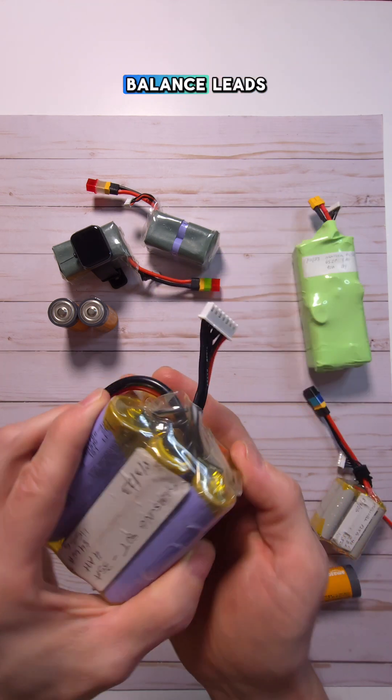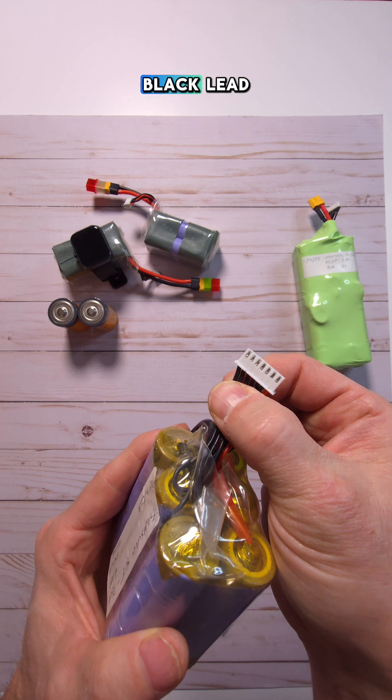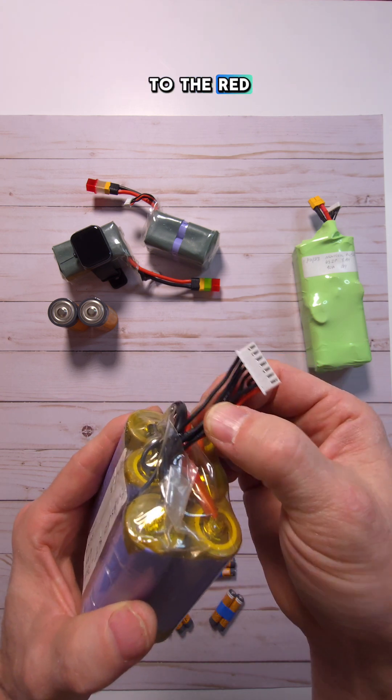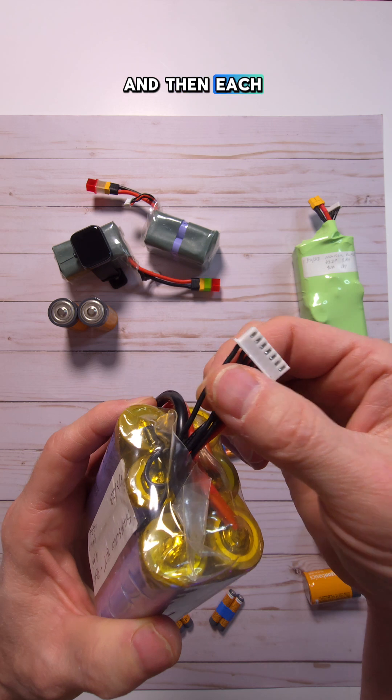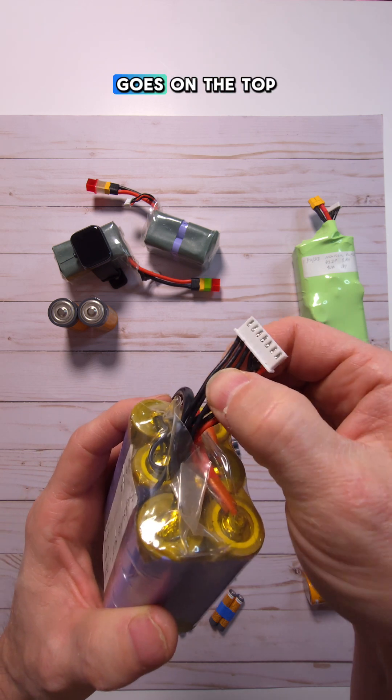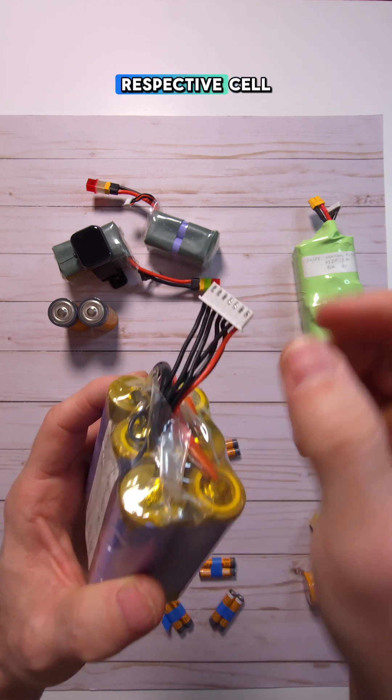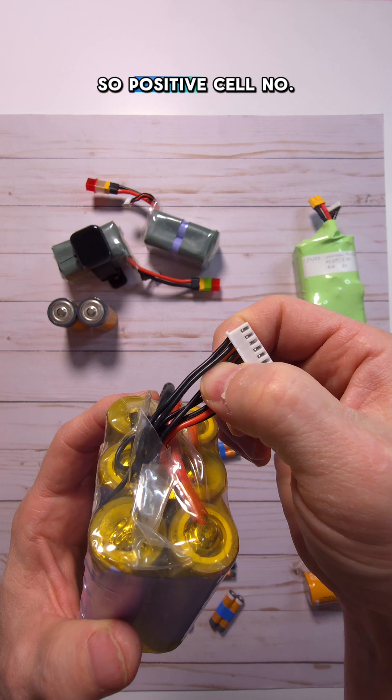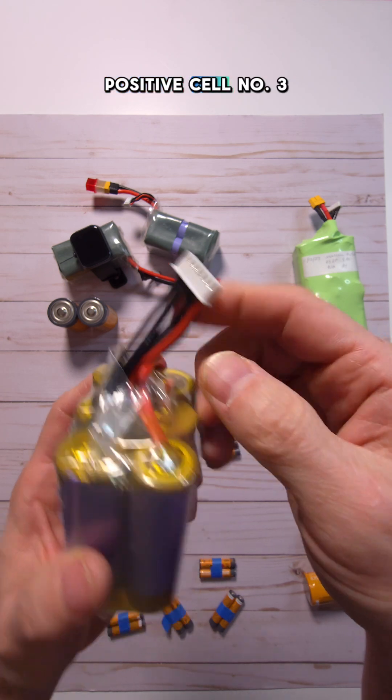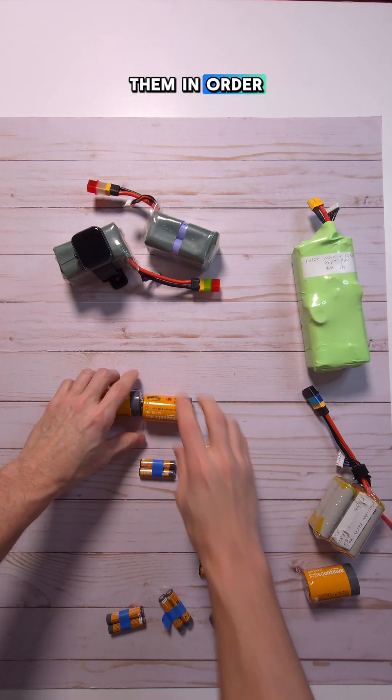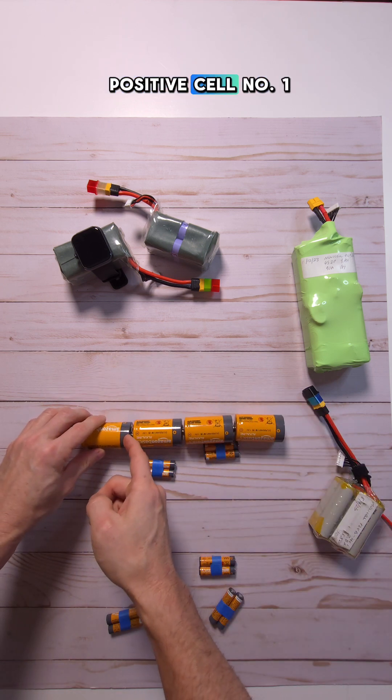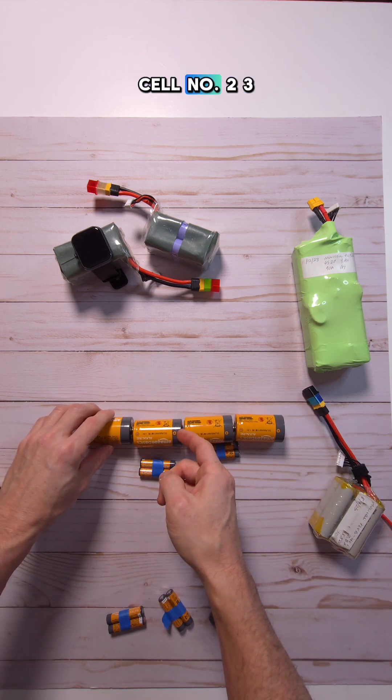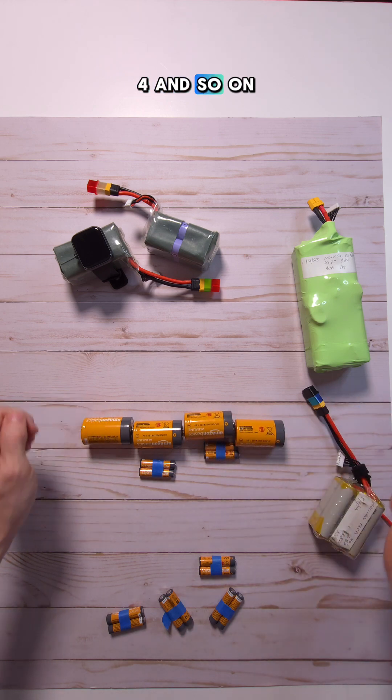Last but not least, don't forget your balance leads. You always work from the first black lead all the way up to the red. The very first wire goes on the negative end of your battery, and then each subsequent wire after that goes on the top of each respective cell. So positive cell number one, positive cell number two, positive cell number three. Remember, you put them in order. This would be the top of positive cell number one, top of positive cell number two, three, four, and so on.